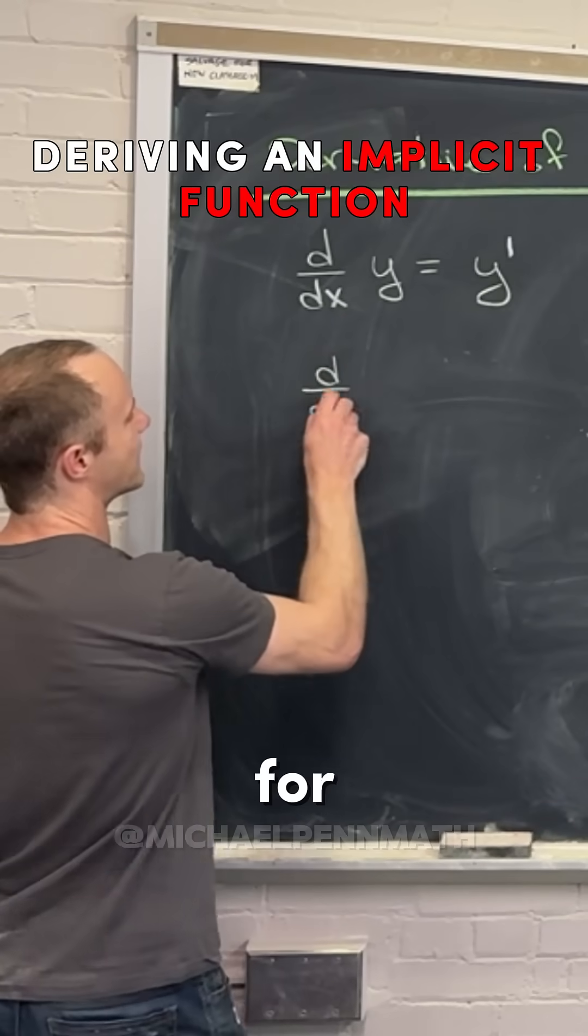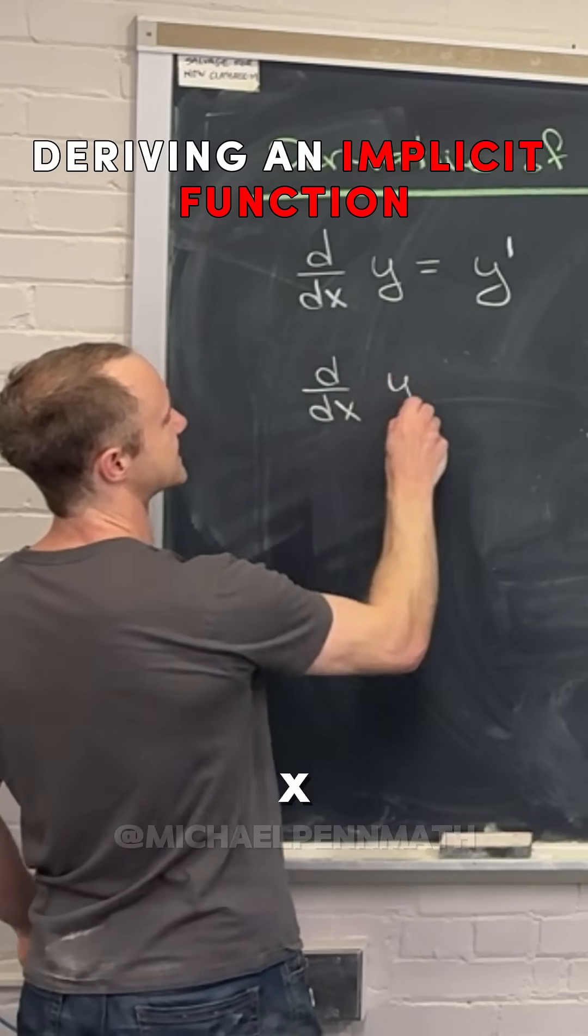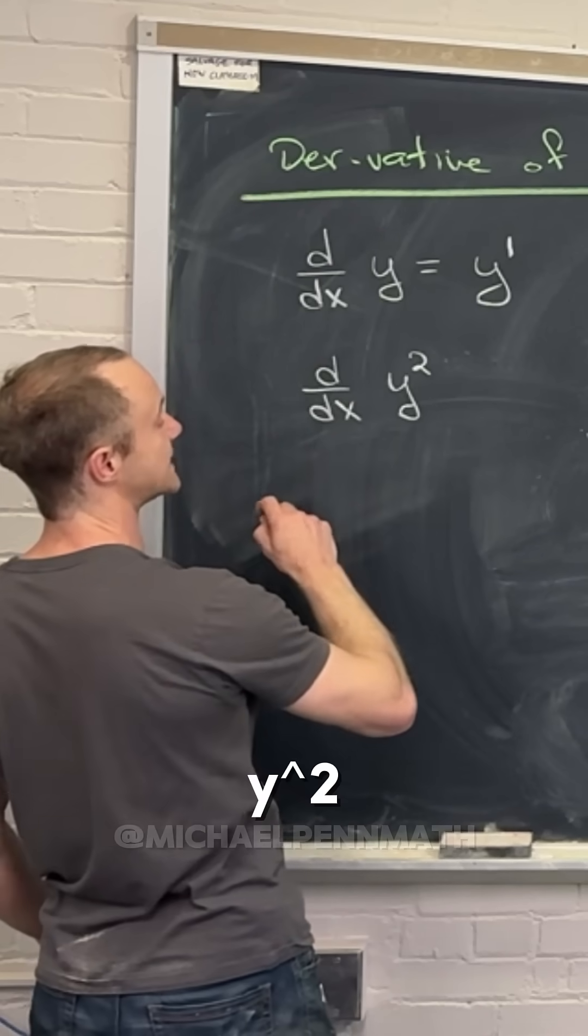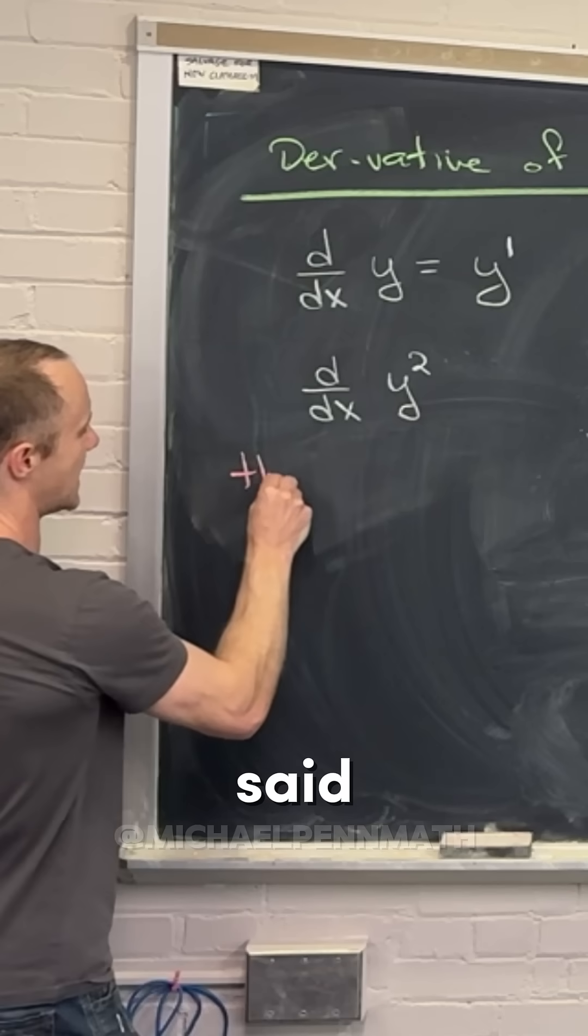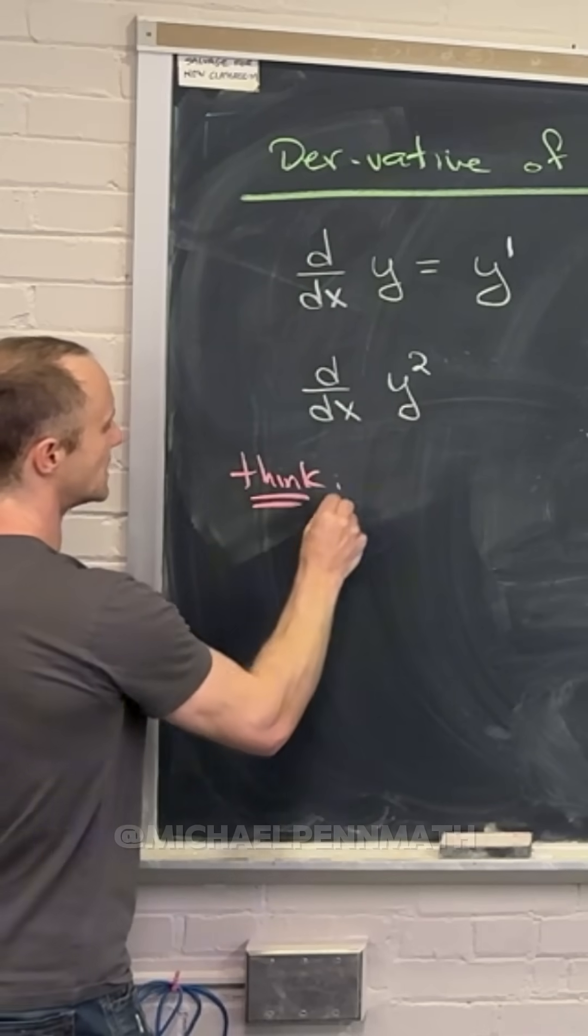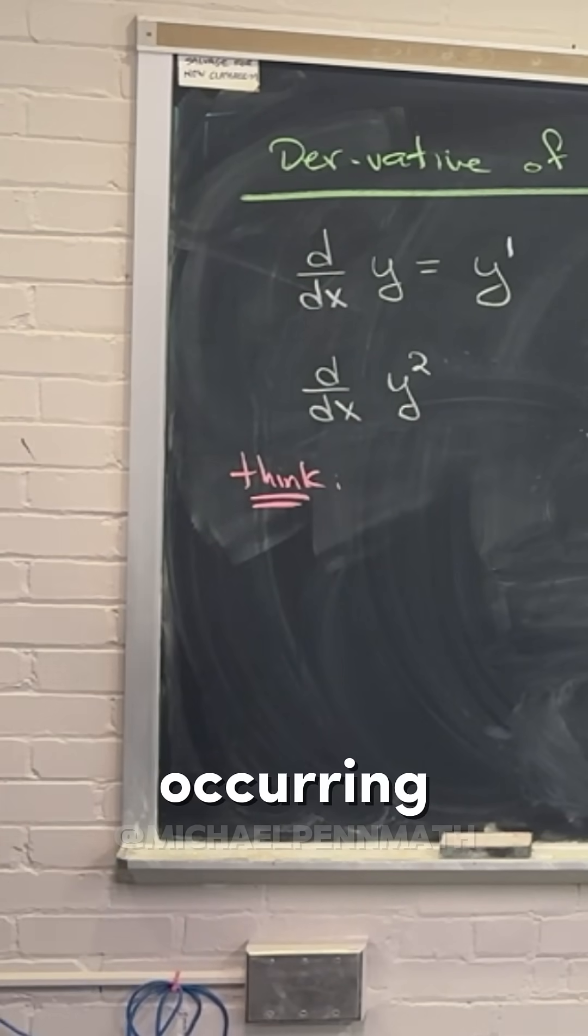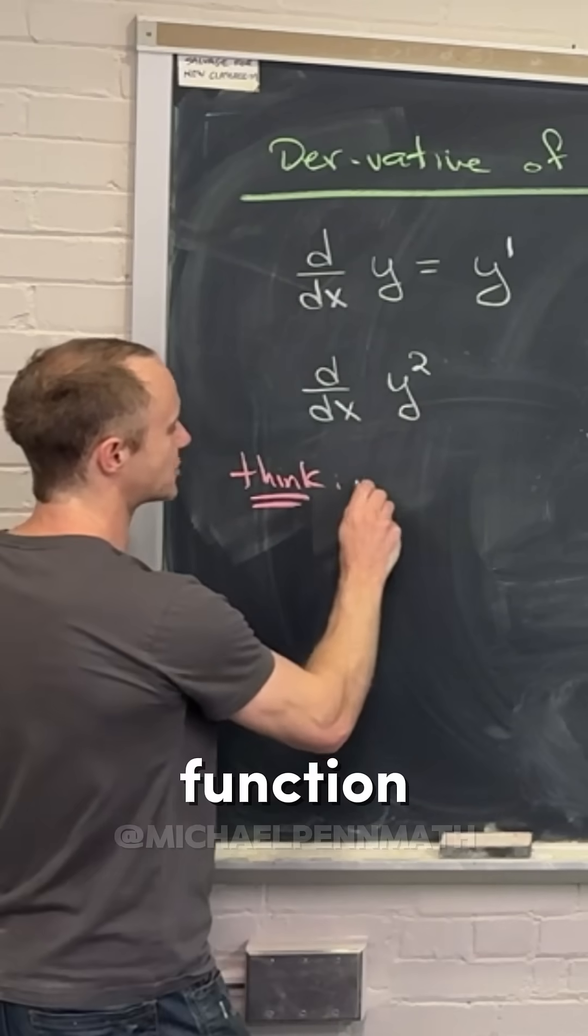So if we were to have, for instance, the derivative with respect to x of y squared, well you want to think, like I said, that the chain rule is occurring. So you've got an inside function.